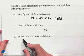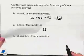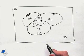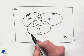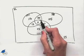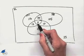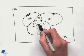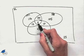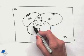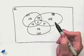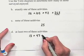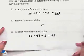How many enjoyed at least two of these activities? At least two means they enjoyed either two or three. Enjoying only two means they are in an intersection of two sets not including the center region — that's the 13, the 47, and the zero. We also allow for enjoying all three, so we add 13, 47, and 2 together, giving us a total of 62.